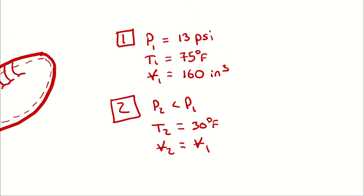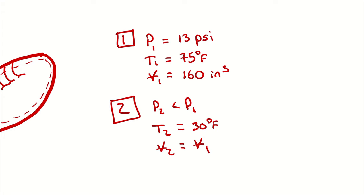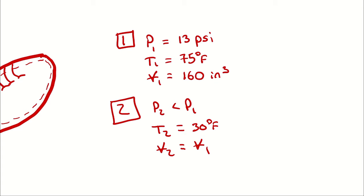At state one, I have two independent intensive properties, which means I have fully defined the state point. From those two independent intensive properties, I can determine whatever else I need using the ideal gas law. At state two, I know one independent intensive property, and I know that the volume doesn't change. However, volume itself is not intensive, so that doesn't give us enough information to fully define state two.